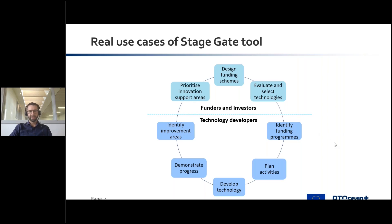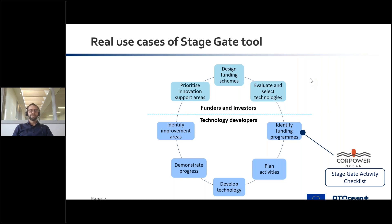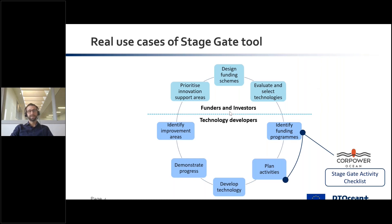Let me bring back some of those examples we discussed as we went along. Starting with Core Power Tech — Core Power Ocean — developing their wave energy technology. At the early stages, they wanted to identify funding programs. They needed to use the activity checklist to understand what the international community or a particular funding body is expecting at each stage of their program, and which stage is most applicable to them. They use that expectation to plan the activities of their proposal into a funding scheme, but also their engineering project that follows.